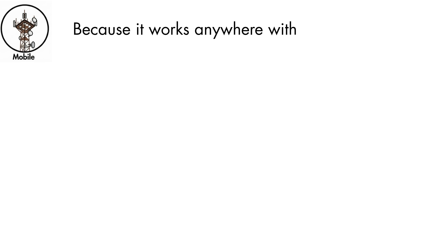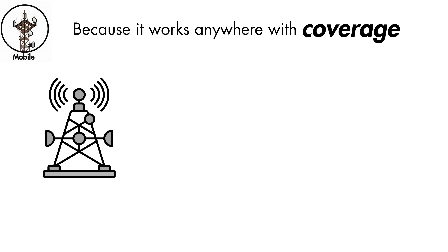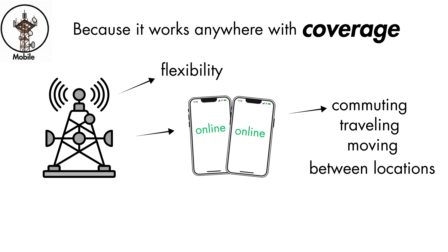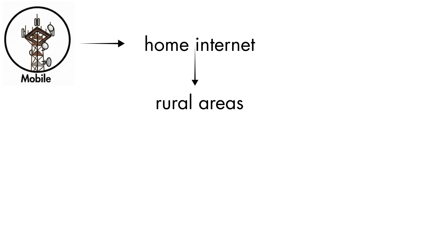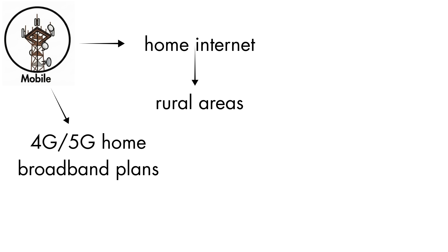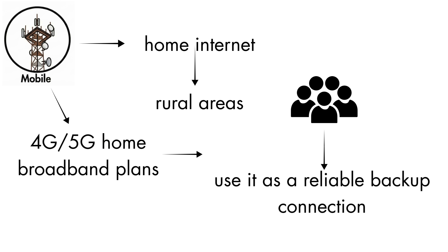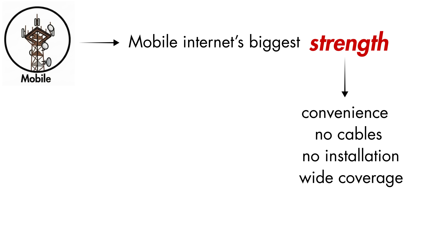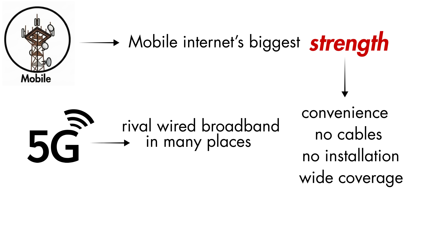Because it works anywhere with coverage, mobile internet is all about flexibility. It keeps smartphones online everywhere — while commuting, traveling, or moving between locations. It can also serve as home internet in rural areas through 4G and 5G home broadband plans, and many people use it as a reliable backup connection. Mobile internet's biggest strength is convenience: no cables, no installation, and wide coverage. Modern 5G can even rival wired broadband in many places.